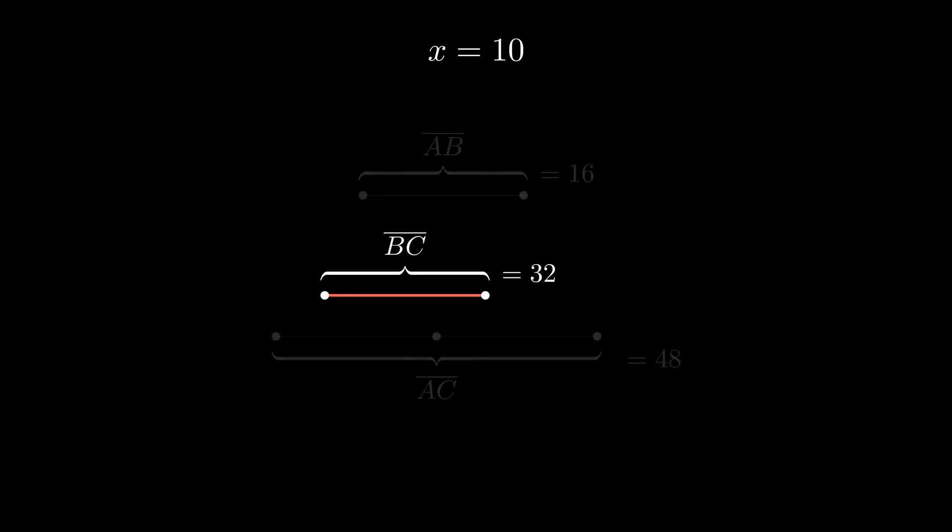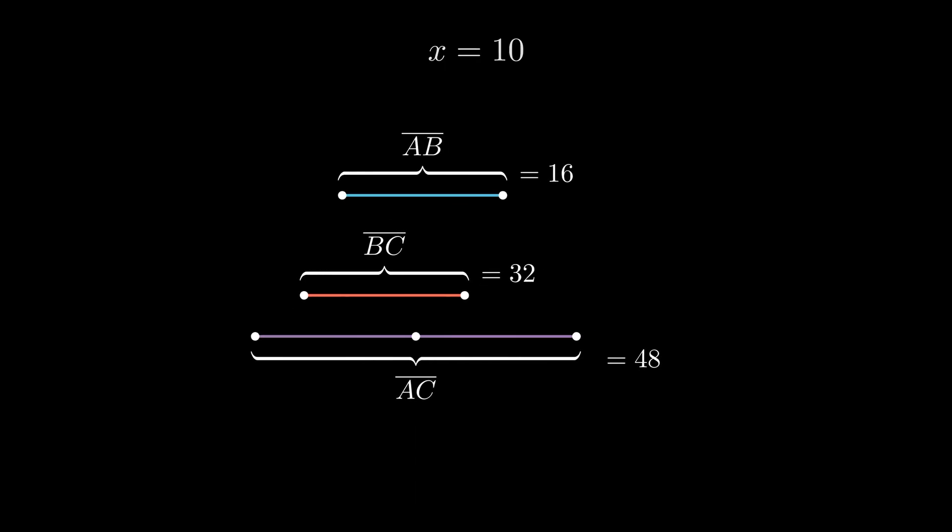To double check our work, we can add the two sums we just calculated and we should get the total length of line segment AC of 48. Perfect. This checks out.